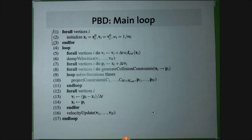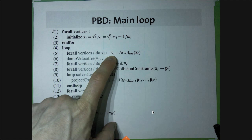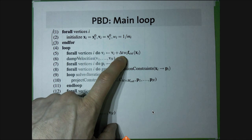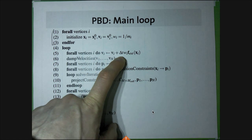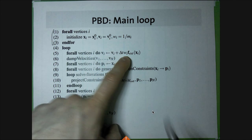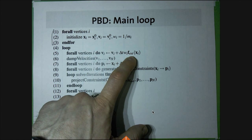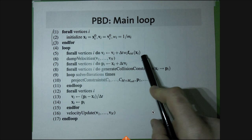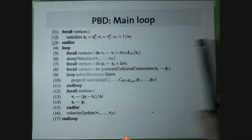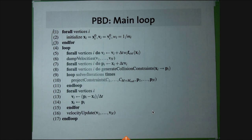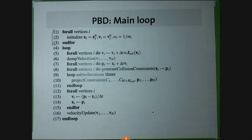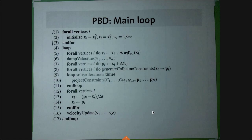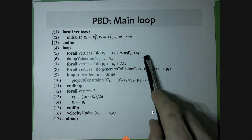In the simulation loop, the first step updates velocities: it's essentially explicit Euler on the velocity. The delta T is the timestep. The W's are the inverse masses, and F_ext are the external forces — typically just gravity, though you can add a wind force. This is very simple.